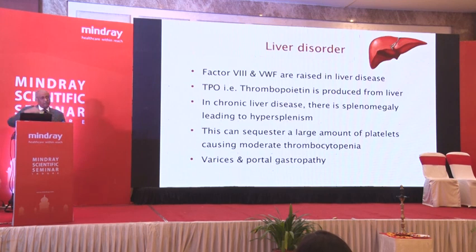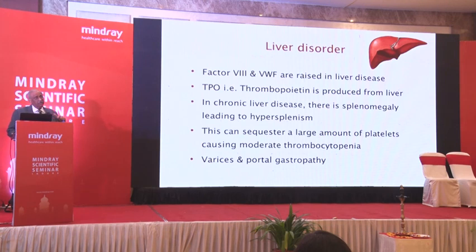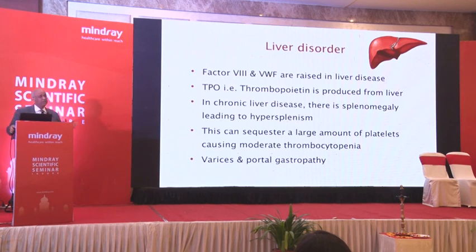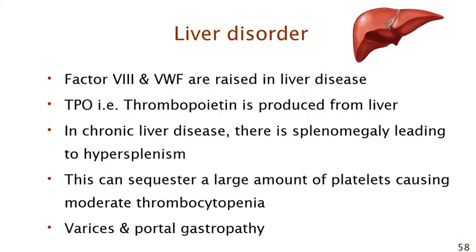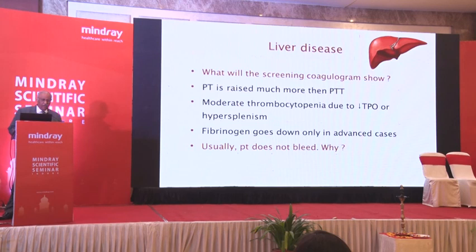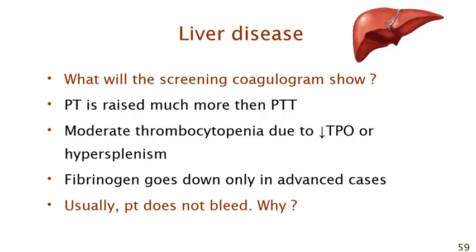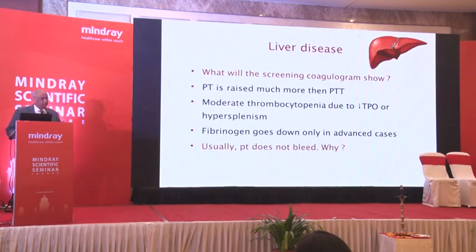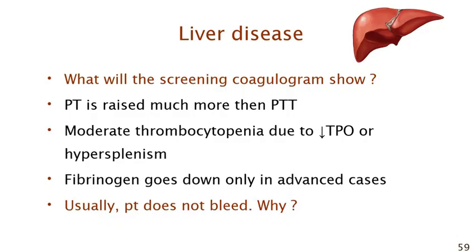Platelets require thrombopoietin, which is produced by the liver. If liver is not working, you can have thrombopoietin deficiency with a healthy marrow. In cirrhosis, the spleen is invariably enlarged and sequesters platelets. So platelets could be low in liver disease due to TPO deficiency and hypersplenism. A screening coagulogram in liver disease will show raised PT — disproportionate to PTT — and moderate thrombocytopenia, never severe. Fibrinogen only goes down in very advanced cirrhosis.